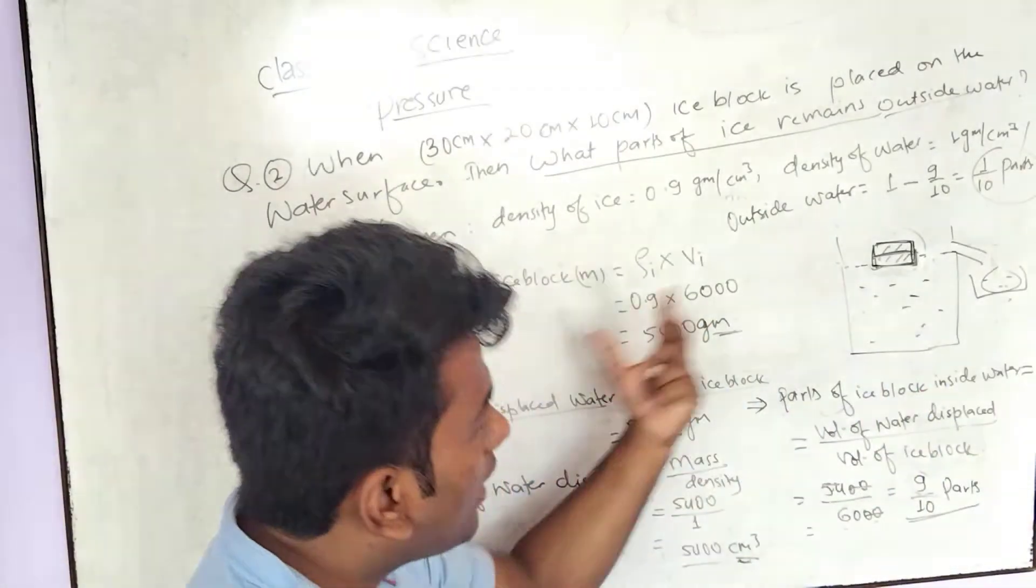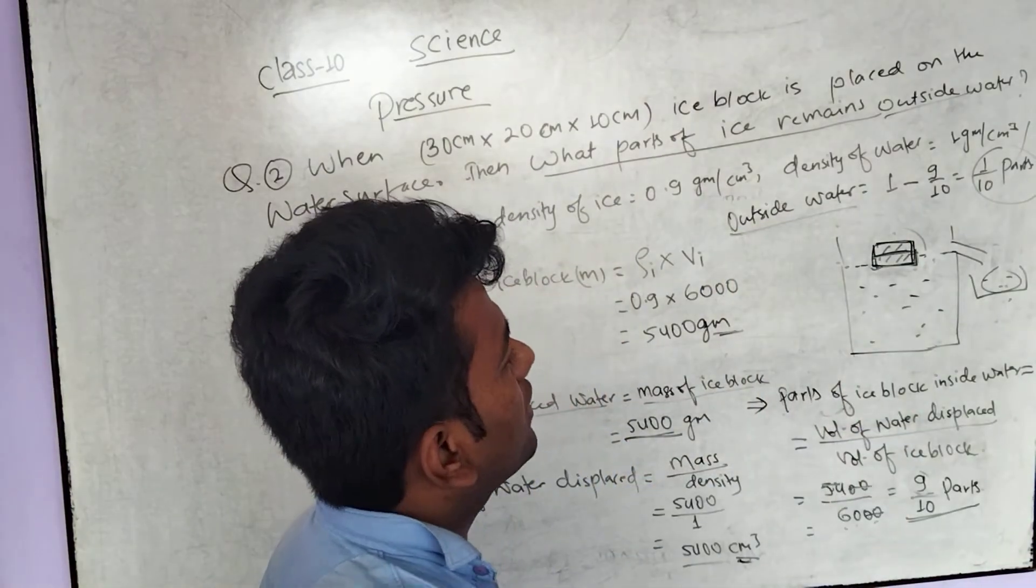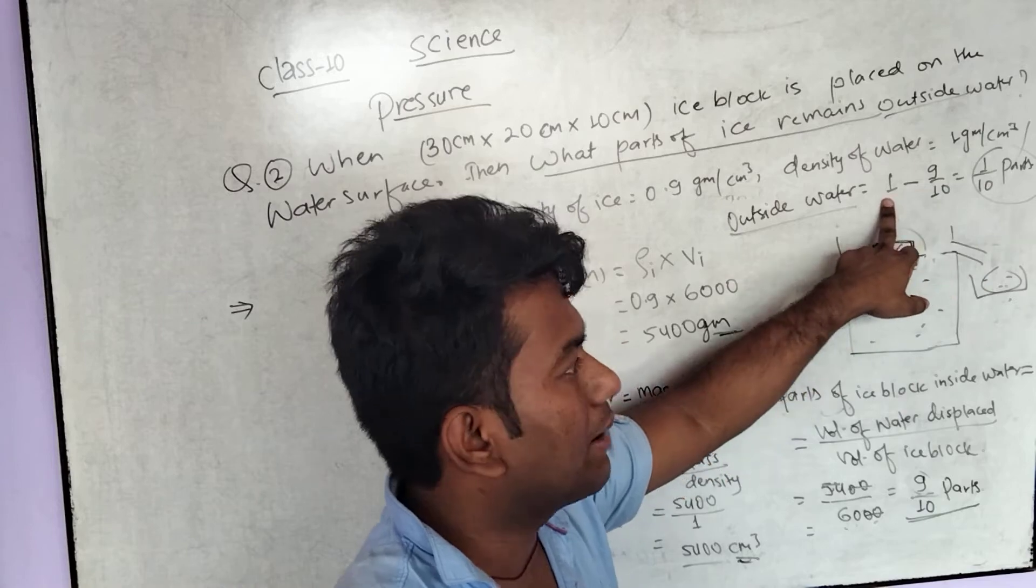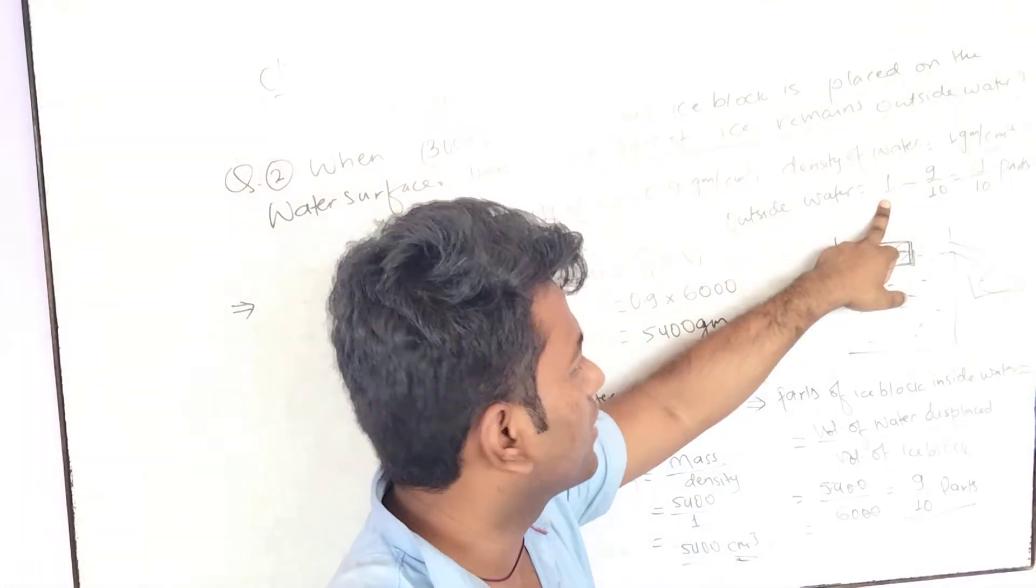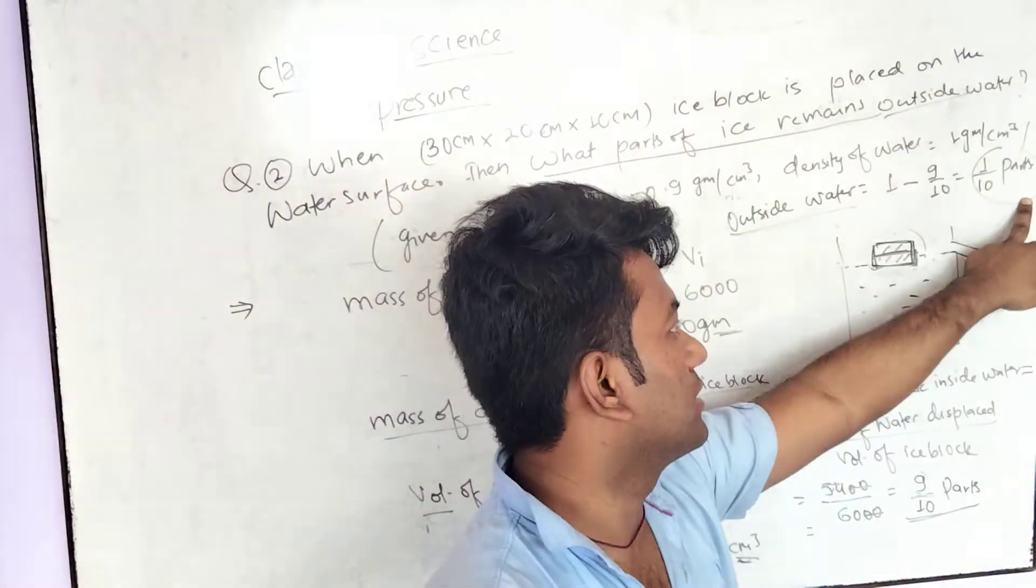So the part outside the water is 1 minus 9 by 10. Total parts is 1, immersed is 9 by 10, so it is 1 by 10 parts that is outside the water surface.